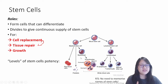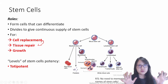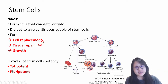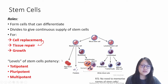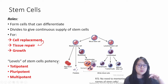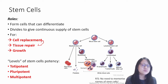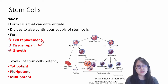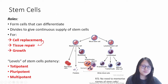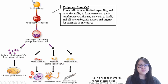Now, different levels though. There are some stem cells that are totipotent, so have total potential. There are pluripotent stem cells and multipotent stem cells. What do we mean by totipotent, pluripotent, and multipotent?